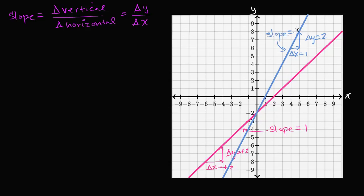Now hopefully you're appreciating why this definition of slope is a good one. The higher the slope, the steeper it is — the faster we increase in the vertical direction as we increase in the horizontal direction.